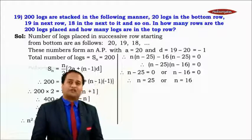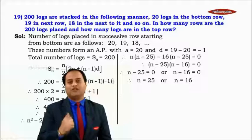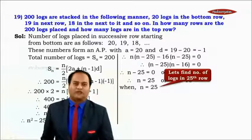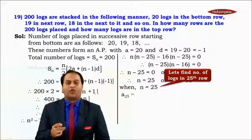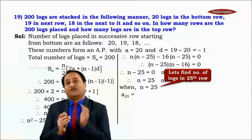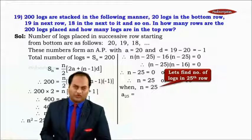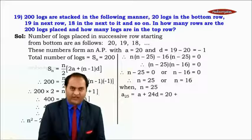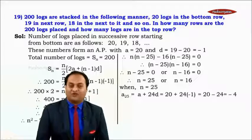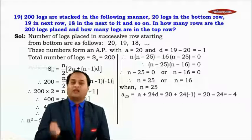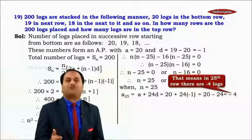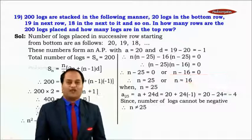Both values of n are positive, so we need to decide which to choose. Let's substitute n = 25 and find the number of logs in the 25th row: a25 = a + 24d = 20 + 24×(−1) = 20 − 24 = −4. Since the number of logs cannot be negative, n = 25 is not valid.